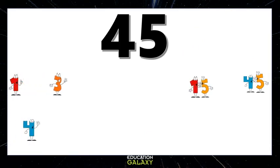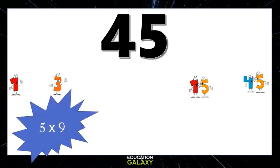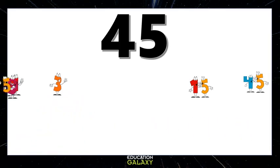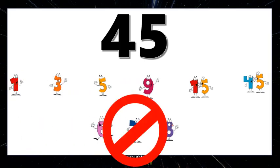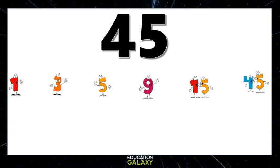4 times nothing is 45, so bye-bye 4. 5 times 9 is 45, so they're factors too. 6, 7, and 8 don't go into 45, so they're out of here. So there we have it — here's our complete list of factors of 45.